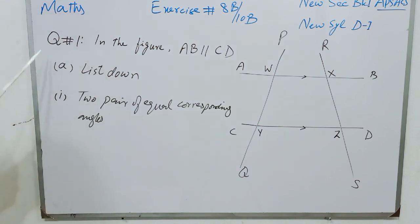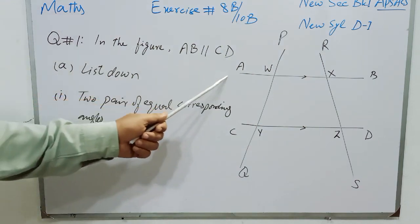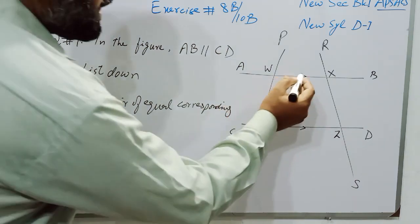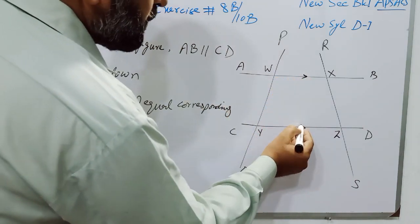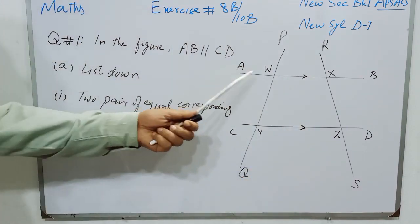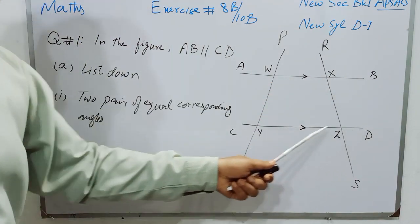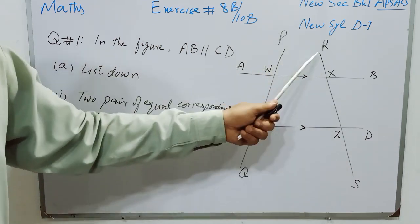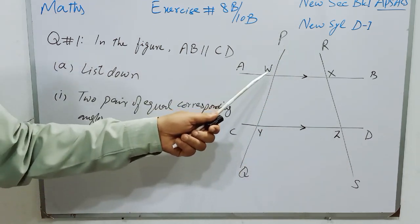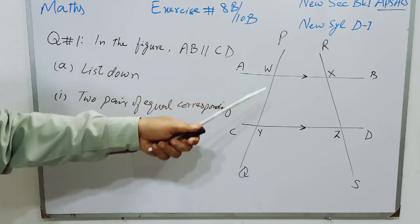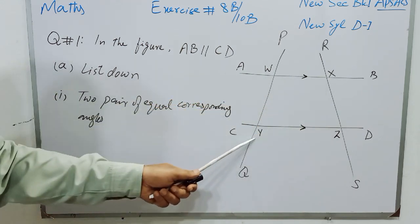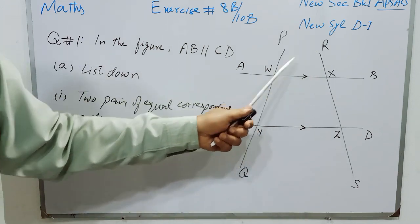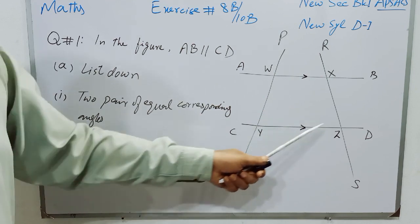Question number 1 is: In the figure, AB and CD are two parallel lines, and we have to prove AB and CD are two parallel lines, whereas PQ and RS are transversal lines intersecting AB at point W and CD at point Y, whereas RS is intersecting AB at point H and CD at point Z.